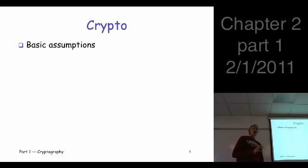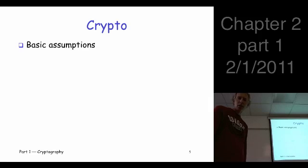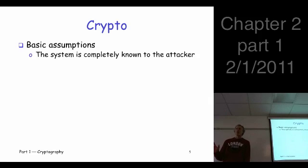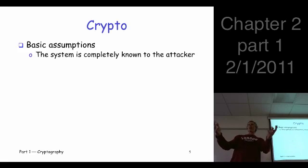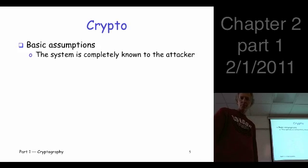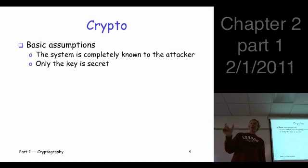We make one very basic assumption in cryptography, and it's clearest here. We assume that the system — the overall algorithm, all the details — are known to the attacker. Trudy gets to know which algorithm you're using, how many bits are in your key, which version of the software, everything. The only thing that's secret, the only thing Trudy doesn't know, is the key — either the symmetric key, or in the case of public key, the private key.